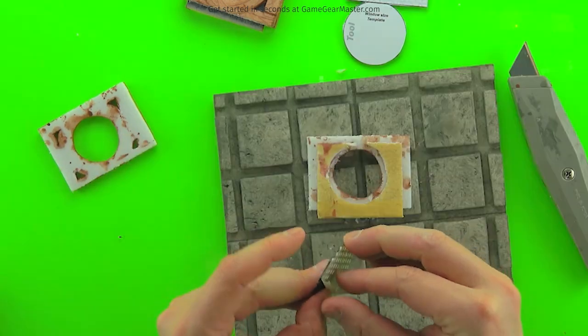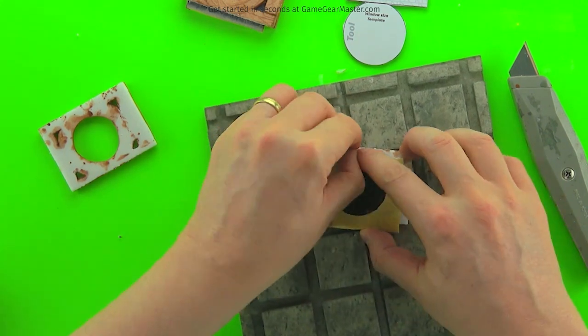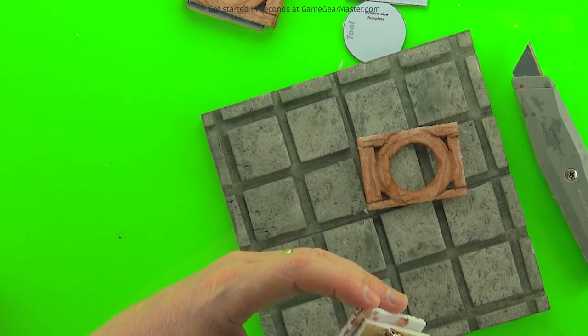There you go. Take off the masking tape. This way you don't even have to glue it in place because it will never be able to get out. And then just glue on the other wall.